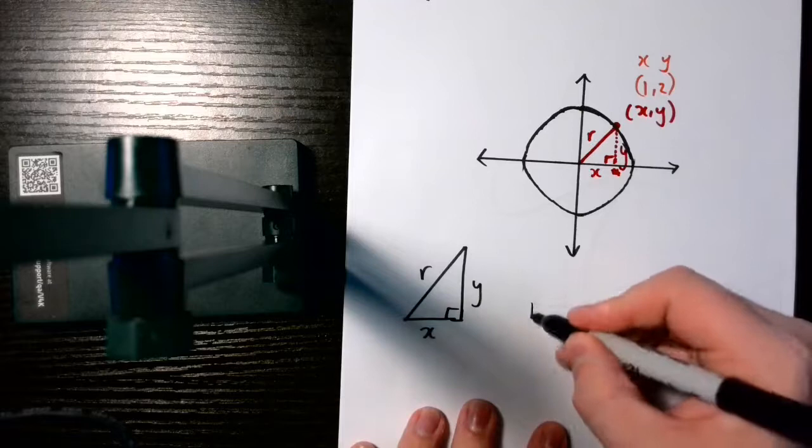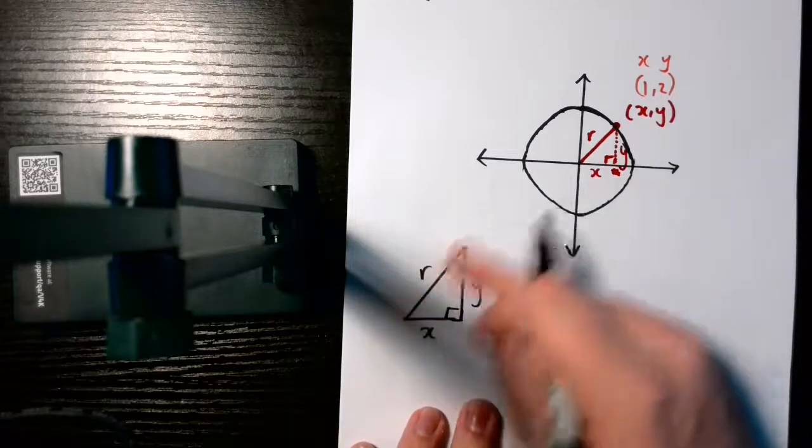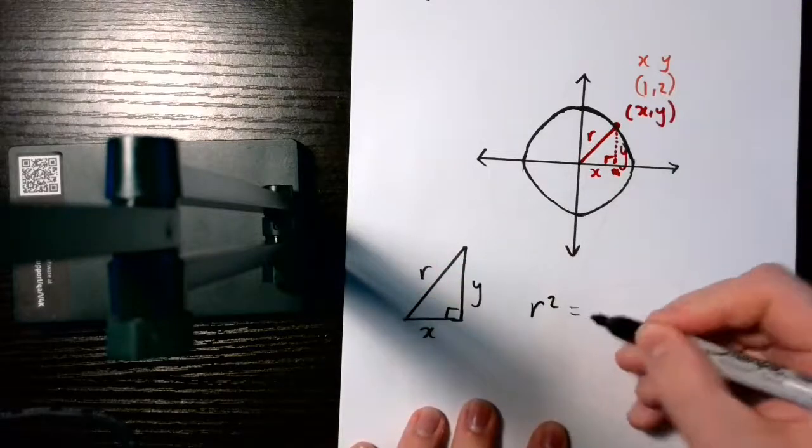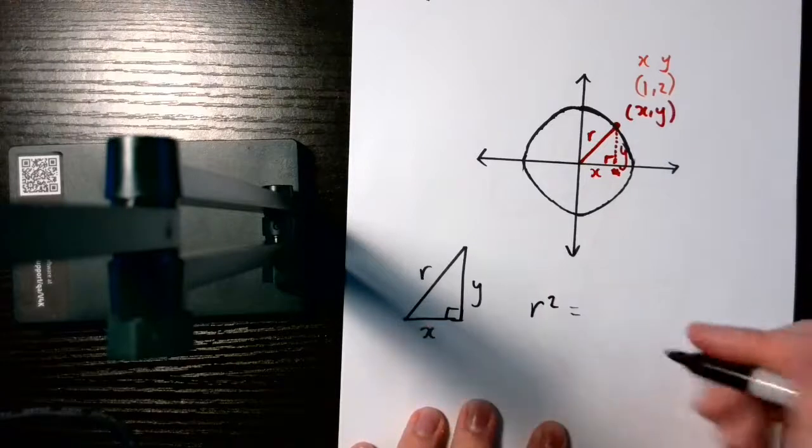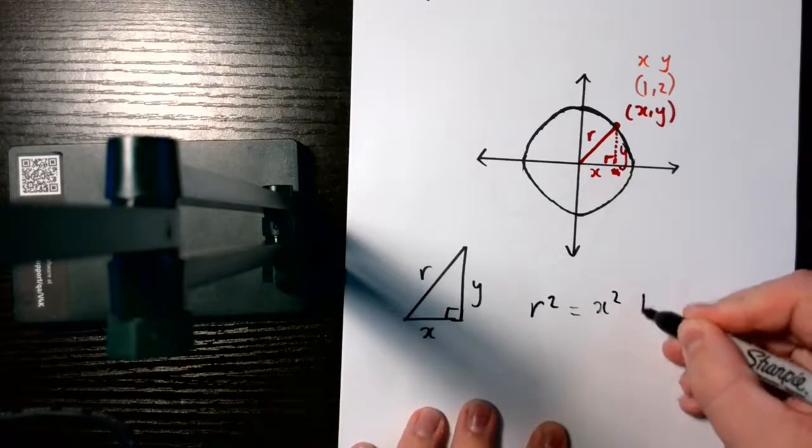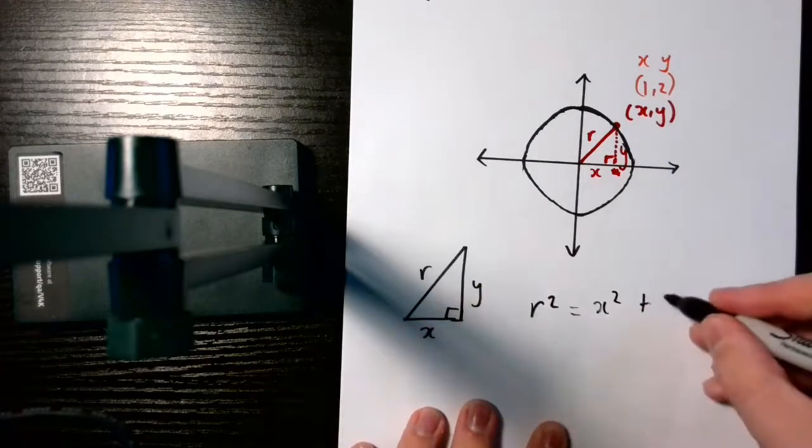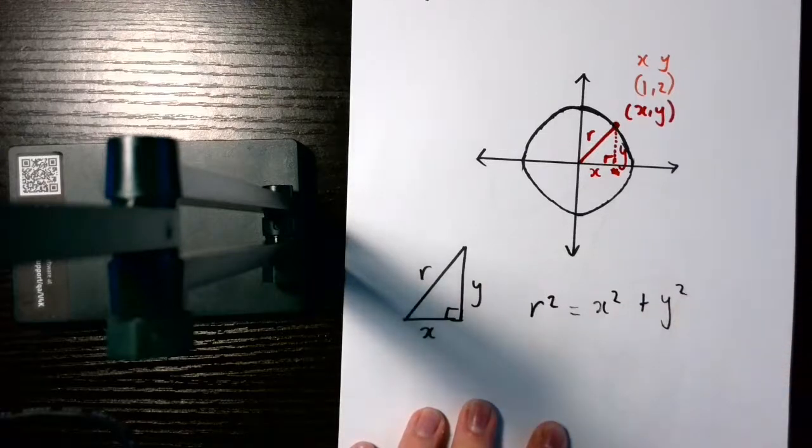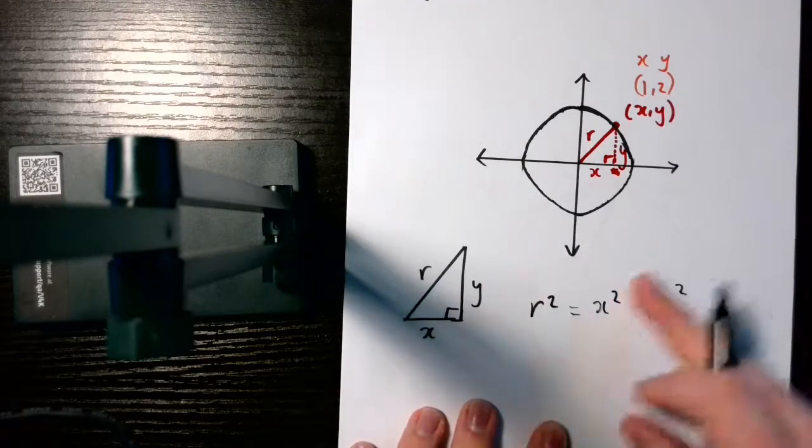So, if I have r squared, that's our hypotenuse, our radius of our circle here, it's equal to this side length squared, so x squared, plus this side length squared, y squared. That's using Pythagoras' theorem.